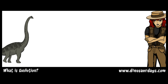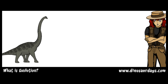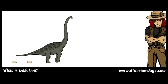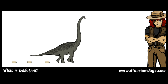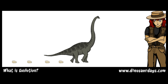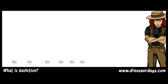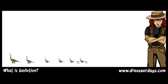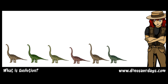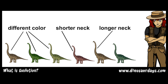When a dinosaur lays 100 eggs, each baby dinosaur will have a special set of genes that makes her different from all the others. Some will have larger eyes or longer teeth. Some will have different colors. The babies get their genes from their parents, but none of them are exactly the same as their parents.